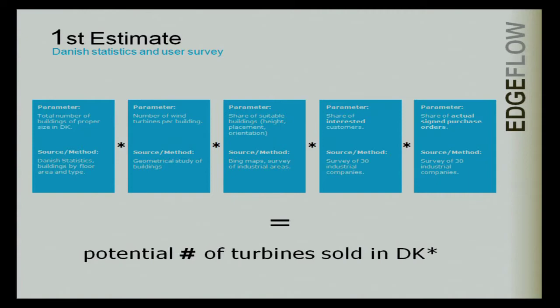Of course, those buildings weren't all interesting for my product because it's a wind turbine — you can have buildings blocking each other, buildings facing the wrong direction, and buildings that aren't of proper height. So I had to go on Google Maps and point out different industrial areas.